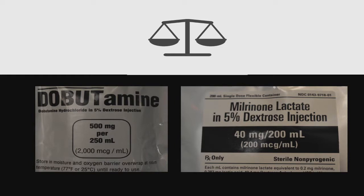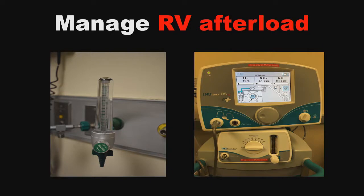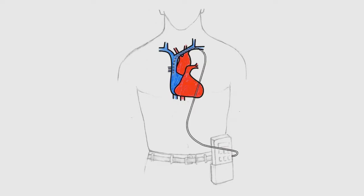As best you can, you want to manage RV afterload. Hypoxia promotes pulmonary vasoconstriction and increases RV afterload, so supplement oxygen liberally to these patients. And if you have a patient on a vent, think about using nitric oxide, an inhaled pulmonary vasodilator. If you have a patient who's got pulmonary arterial hypertension and lives on a prostacyclin infusion for pulmonary vasodilation, you've got to keep that infusion going. Abruptly discontinuing that infusion can lead to reflex pulmonary vasoconstriction and hemodynamic collapse.